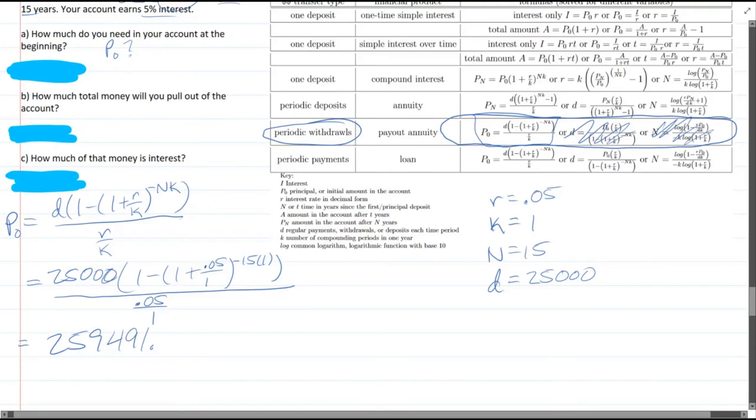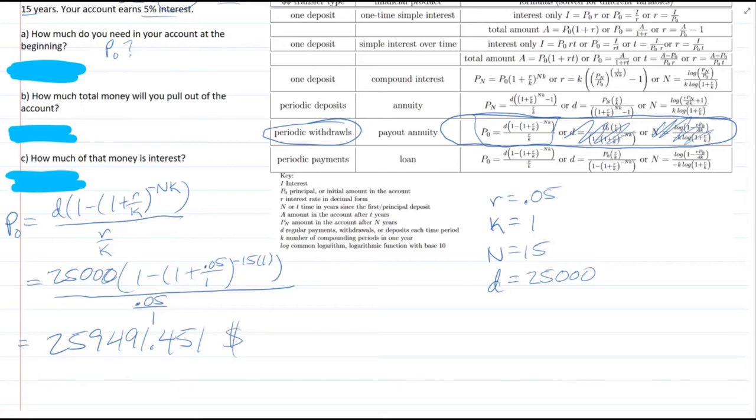I'm going to write down some decimals. Okay, so this is the initial amount. That would be in dollars as the units. So that should be the answer there. Alright, so that is part A.